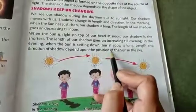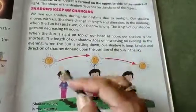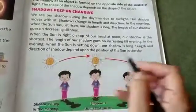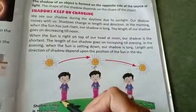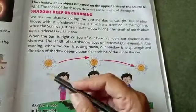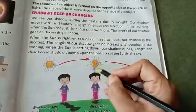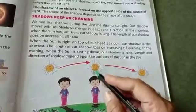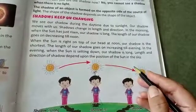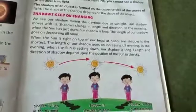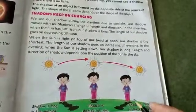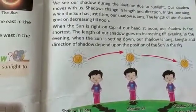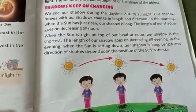The length and direction of the shadow depend upon the position of the sun in the sky. In the morning when the sun rises, our shadow is long; when the sun is on top of our head at noon, our shadow is short; and again till evening, our shadow becomes long. Here our chapter ends, and the textbook exercise will be shown in the next video.